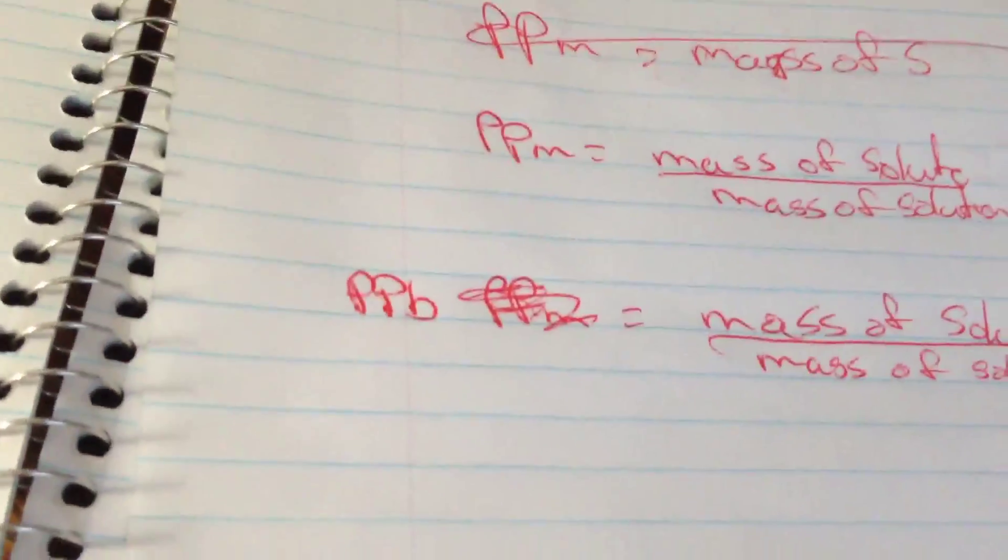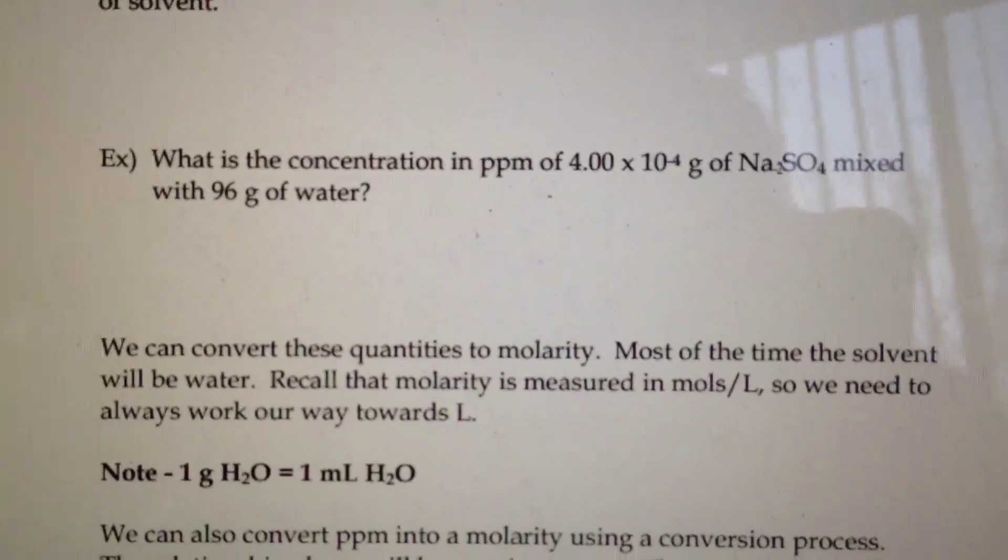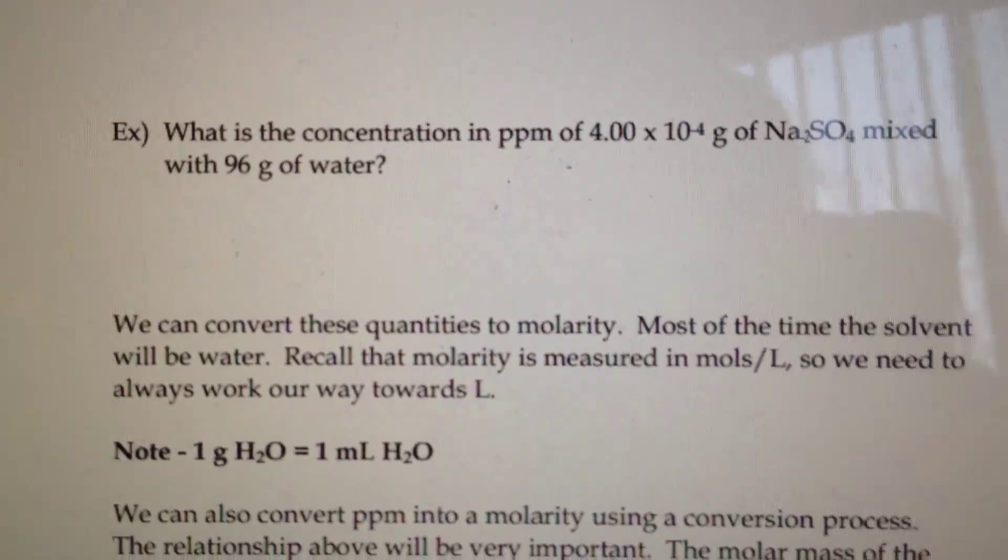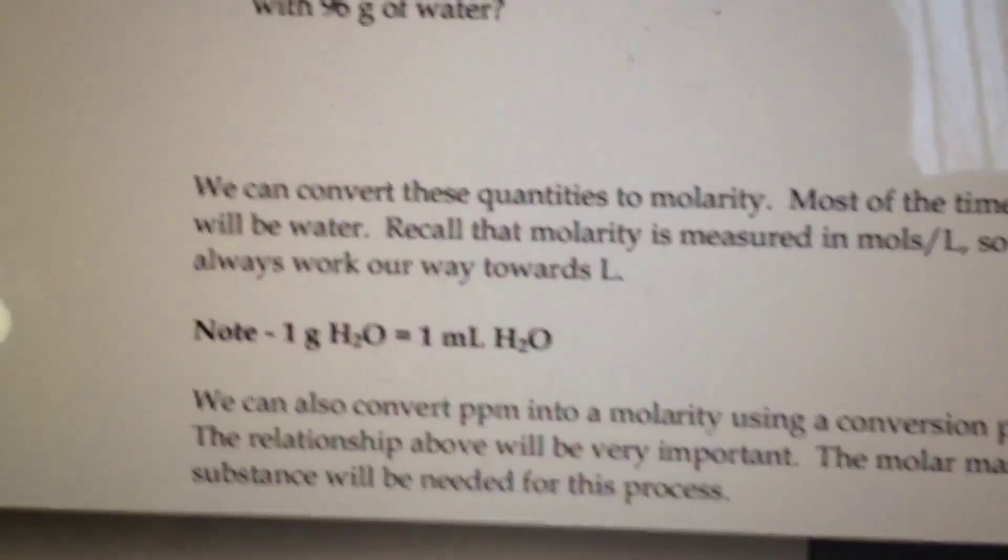So you're gonna get some big numbers here because you're working with millions and billions, but the numbers aren't that bad to work with so it's okay. So for the first example here, let's see if it focuses on my screen. We want a concentration of 4 times 10 to the negative 4 grams of sodium sulfide mixed with 96 grams of water. So all that's gonna look like, so this is parts per million,